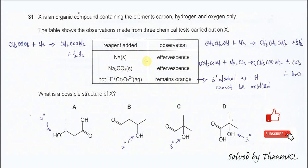So let's go through one by one. When the X with the sodium, we will see effervescence. This is telling us in the X it might have alcohol or carboxylic acid. Because both functional groups will react with sodium and form hydrogen gas. That's why effervescence is there.